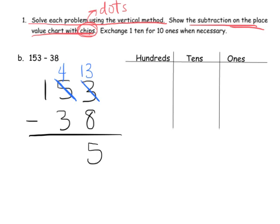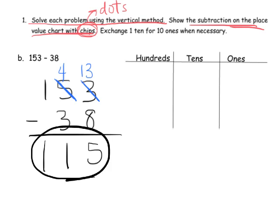Now we look at the tens place. We have 4 tens, take away 3 tens — we don't need to unbundle — we're left with 1 ten. Then, looking at the hundreds place, 100 take away no hundreds leaves 100. So our answer is 115. Let's verify that using the place value chart. The first thing we're going to do is model 153: there's the 100, then we need 5 tens, and then we need 3 ones.